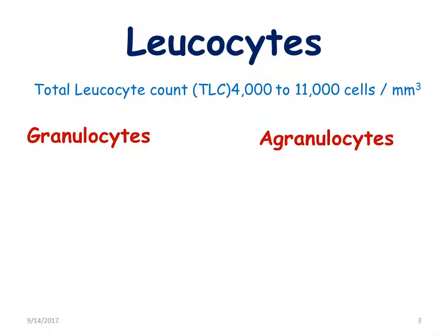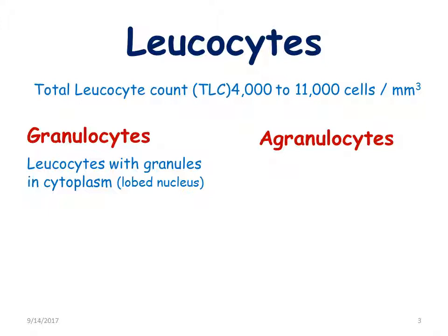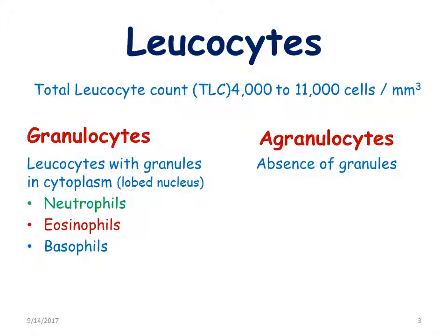Granulocytes are leukocytes with granules in the cytoplasm and a lobed nucleus. They include the neutrophils, eosinophils, and basophils. Agranulocytes do not have any granules in the cytoplasm — hence the name, meaning absence of granules. They are classified into lymphocytes and monocytes, and they contain a single nucleus.